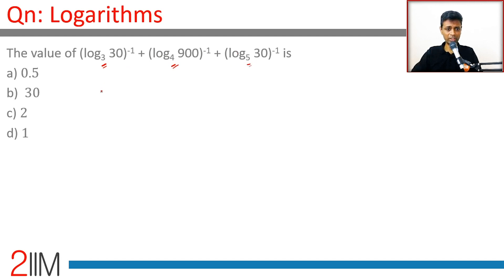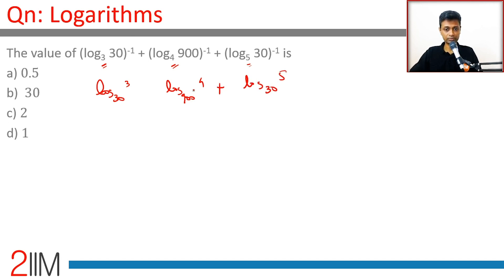Log 3 to the base 30 is nothing but log 4 to the base 900, nothing but log 5 to the base 30. We can represent this also as something to the base 30 — we are through.